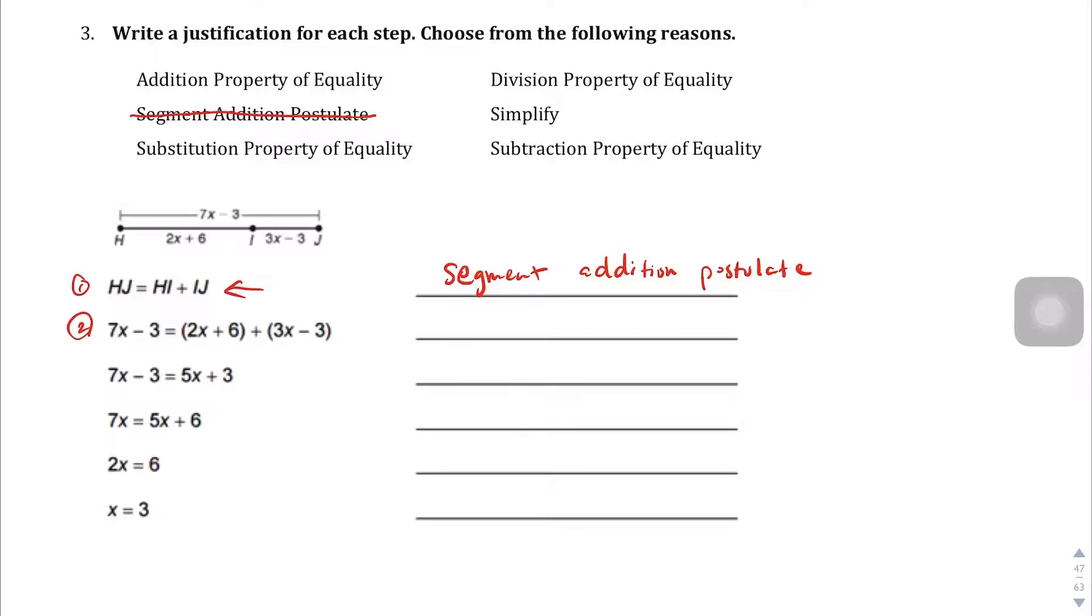That was step 1. Step 2, what's going on here? How do we get from here to here? We substituted those values. hj is this big length right here, 7x minus 3. So this is going to be the substitution property of equality.